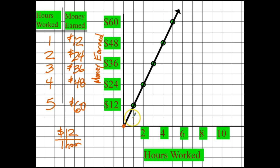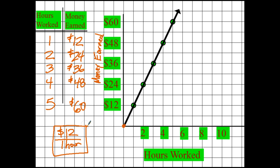Let's check it. If twelve over one — I move one hour, I should be at twelve. Then if I go over another hour, I go up another twelve. That makes sense. Work another hour, make another twelve dollars. Work another hour, make another twelve. And on and on and on. So what I end up finding is my rate is twelve dollars an hour, and I can use this to form all kinds of proportions. What happens if I work eight hours?